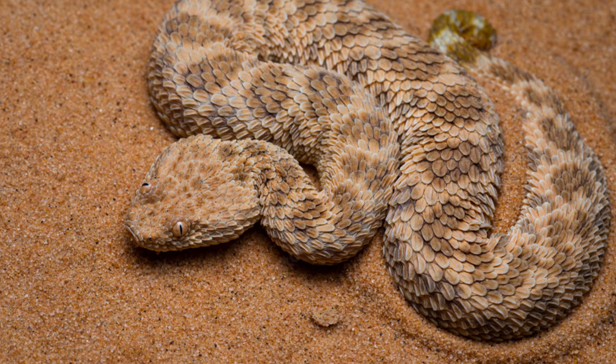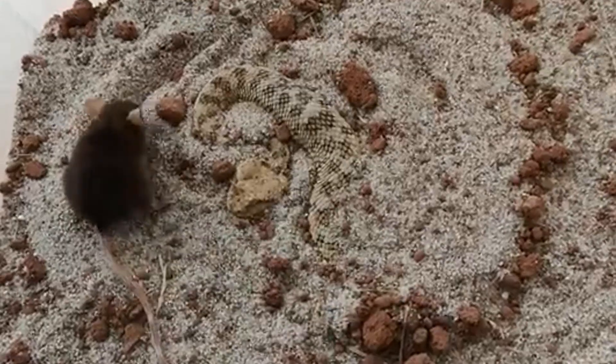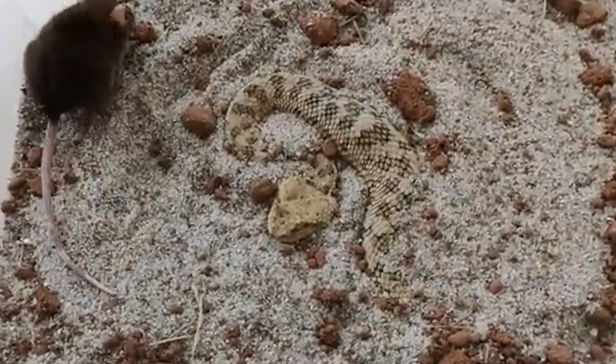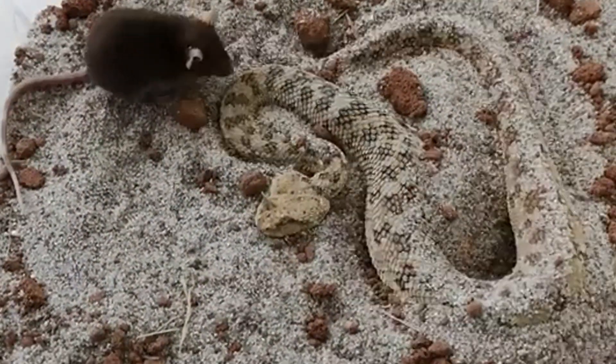It uses a combination of both sit-and-wait ambushing and active hunting. Active hunting is predominantly used in the months right before hibernation to increase energy intake before the long dormant period.